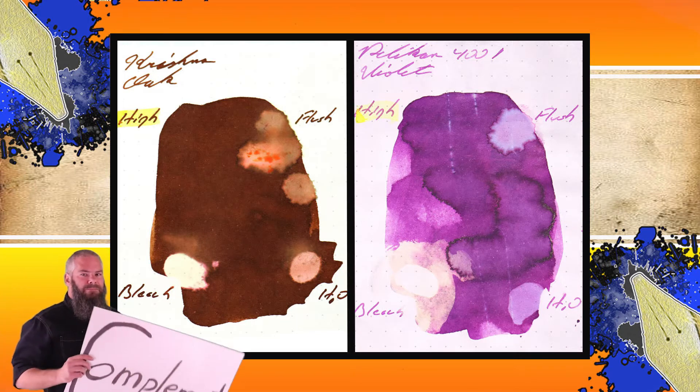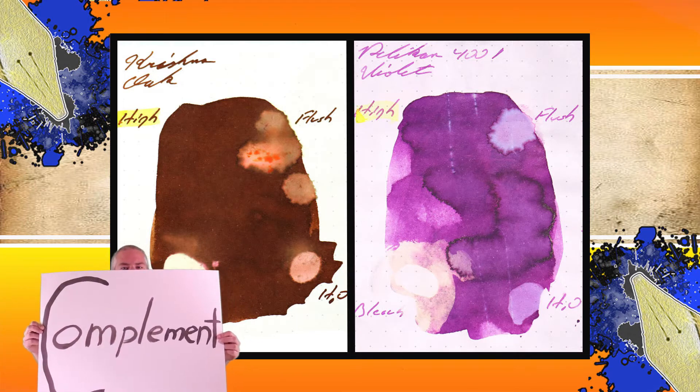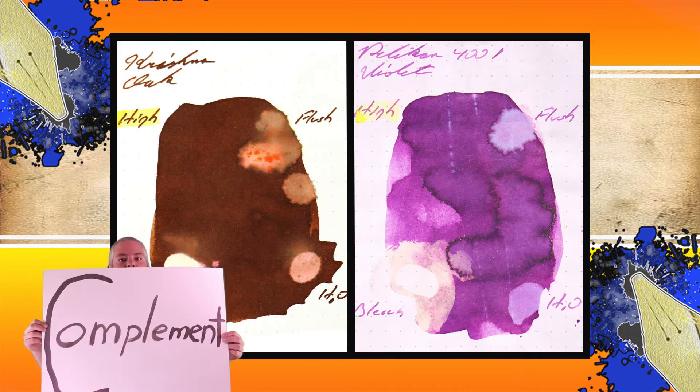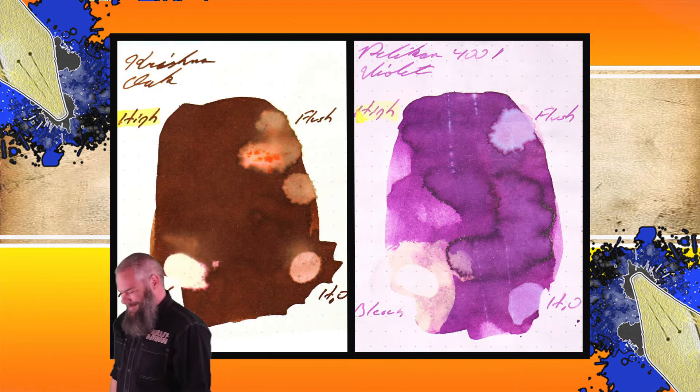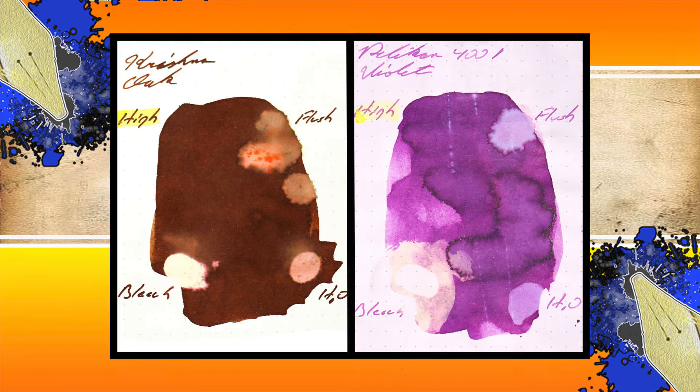Instead of finding inks that look like Pelican's 4001 Violet, I would prefer to find an ink that complements its color on the page. And I wanted a nice brown and chose Krishna's Oak. Looking back the last few days, I know browns have come up quite a bit lately. The second writing sample is done on Limon, Strathmore writing, and Vinta paper.